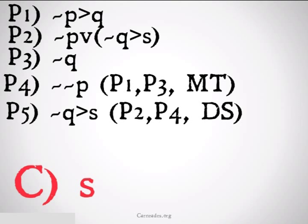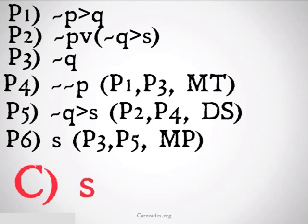We're getting close now. We have something that directly implies s. Well, do we have a not q lying around anywhere? I think we do up in premise 3. So we can use a good old fashioned modus ponens to take premise 3 and premise 5 and conclude s. That's our conclusion.